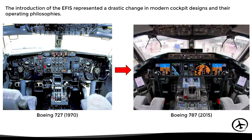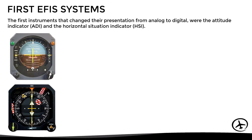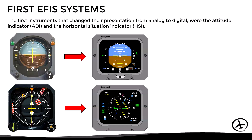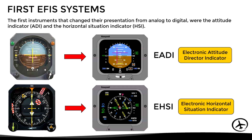This change did not happen abruptly from one day to the next, but occurred gradually. For example, in the first EFIS systems, the first instruments that changed their presentation from analog to digital were the attitude indicator and the horizontal situation indicator. These analog instruments were replaced by digital displays called Electronic Attitude Director Indicator and Electronic Horizontal Situation Indicator, respectively.